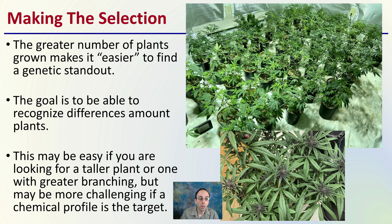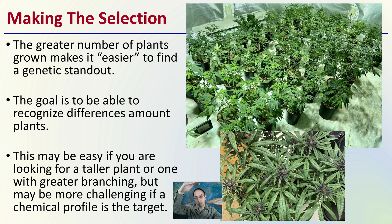The goal is to recognize the differences among the plants you have grown. This may be easy if you're looking for a taller plant or one with greater branching, but may be more challenging if you're looking at chemical profiles as a target. That is still a form of phenohunting, but it's more difficult because you can't just look out over a whole grove of plants and see which one is genetically taller or shorter. Chemical profiles can still be done, but it's a little more complicated.